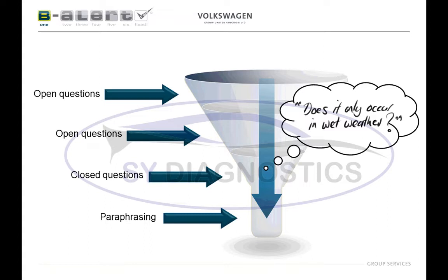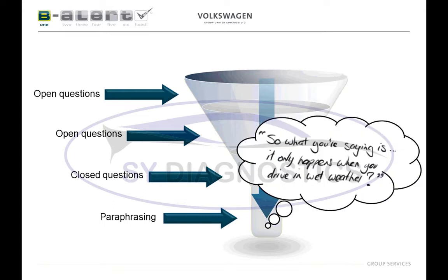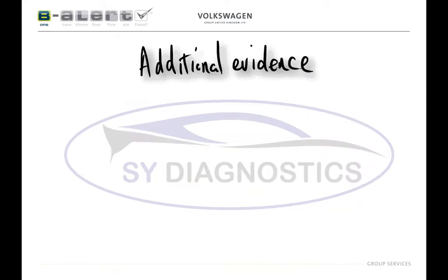A good way to finish this off is by paraphrasing — basically repeating what the customer has said back to them in the form of a question. It's a very effective way of making sure you haven't misunderstood them, clarifying what they mean, and gaining the customer's confidence. A good example of paraphrasing is: 'So what you're saying is it only happens when you drive in wet weather?' At this point they might say 'no, that's not what I'm saying' and correct you, or 'yes, that's exactly what I'm saying.' With all this questioning, the evidence is starting to pile up.